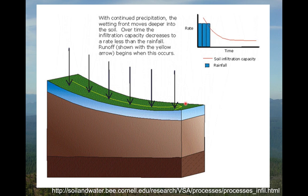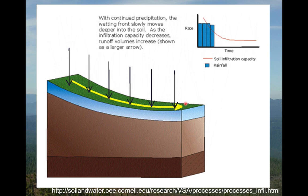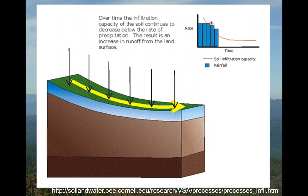As rain continues, infiltration excess overland flow increases in volume if infiltration capacity keeps declining, even if rainfall rate is constant or slightly declining. The greater the difference between infiltration capacity and rainfall rate, the more overland flow is generated. At the end of the storm, as rainfall drops to zero, the hillslope drains, but infiltration excess overland flow ends pretty quickly — it drops off and goes to zero.